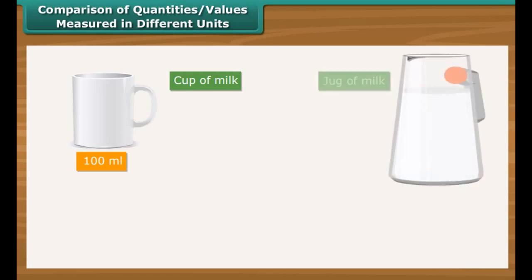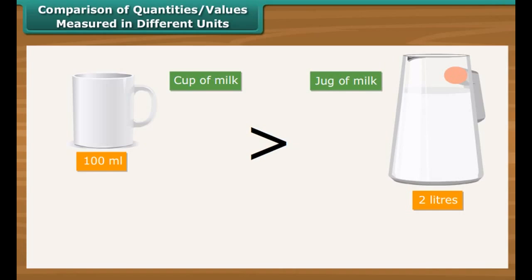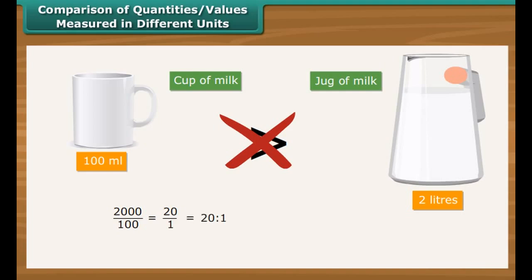When comparing quantities measured in different units, Vinita has 100 milliliters of milk in a cup and 2 liters of milk in a jug. Although 100 is greater than 2, we cannot say the cup has more milk because the units differ. We express 2 liters as 2000 milliliters. Now the quantities are comparable. The ratio is 2000 by 100, which is 20 by 1 or 20 is to 1. Therefore, the milk in the jug is 20 times more than the milk in the cup.